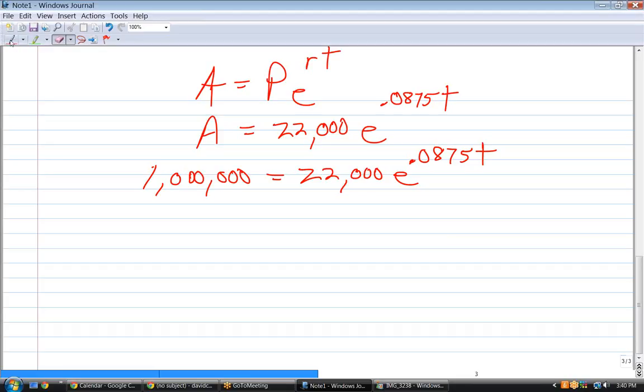Divide by 22,000. All right. What do you get when you divide one million by 22,000? 45.45. That's four-ninths, I think. All right.